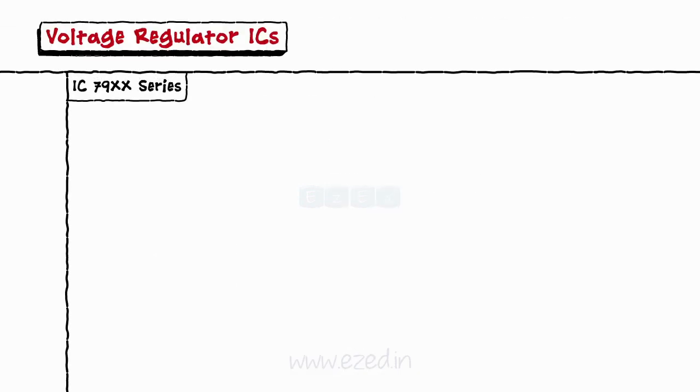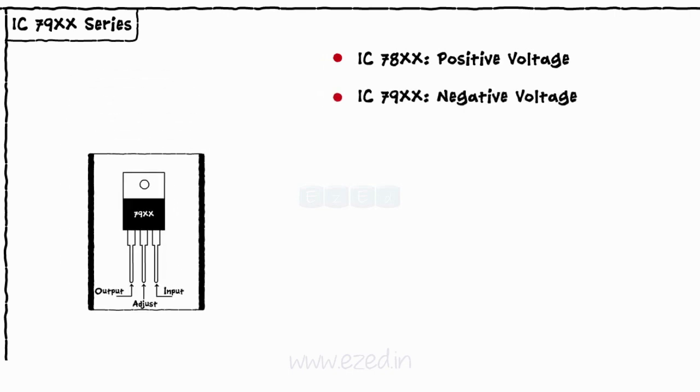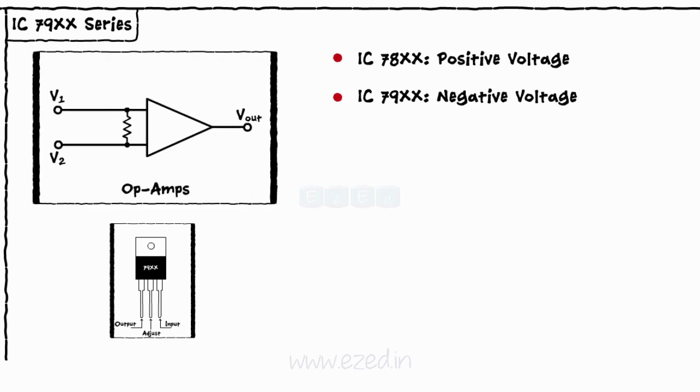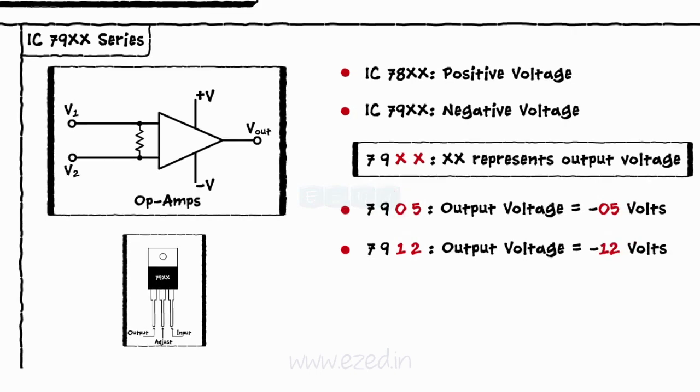Now let's study ICs of 79XX series. As 78XX series ICs provide positive regulated output, 79XX series ICs provide regulated negative output. They are mainly implemented in circuits like operational amplifiers which need a dual power supply like plus V, zero, minus V. Here also the last two digits represent the output voltage. Thus, 7905 supplies a constant voltage of minus 5 volts, 7912 provides a constant voltage of minus 12 volts.